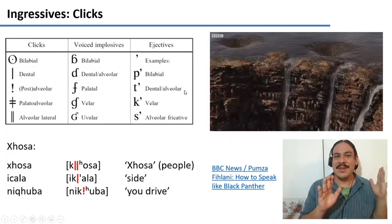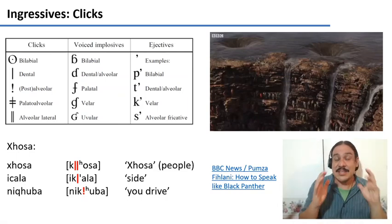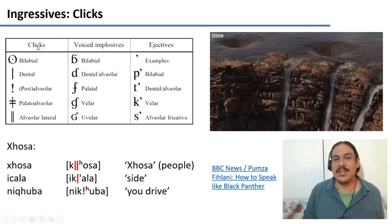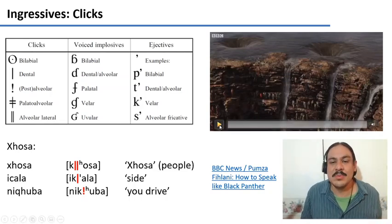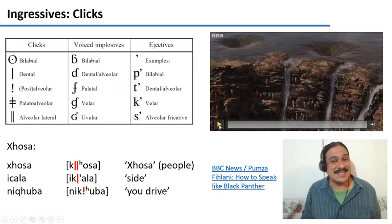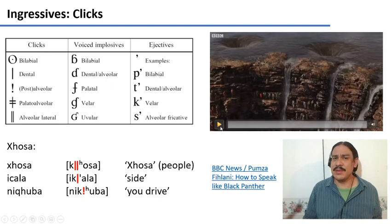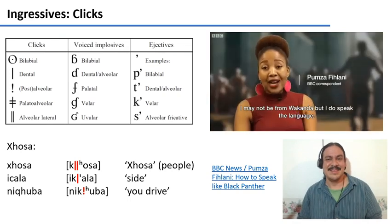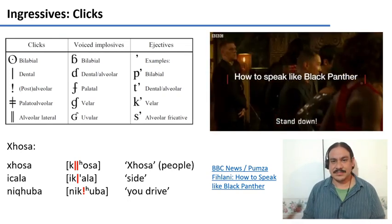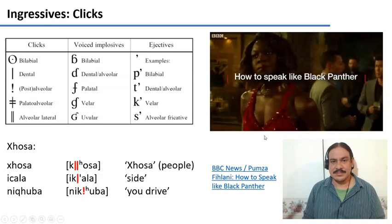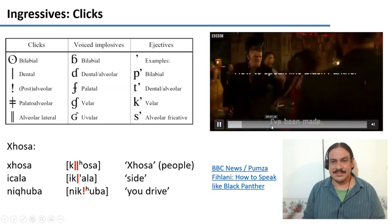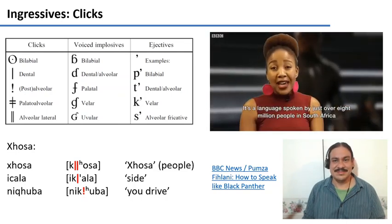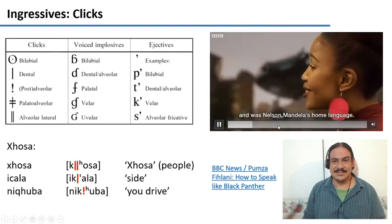This is a series of consonants where the air goes in. The first of these is called clicks, and here is Pumza Filani from the BBC with an example of a language where clicks are used — Xhosa, a language spoken by just over eight million people in South Africa and Nelson Mandela's home language.